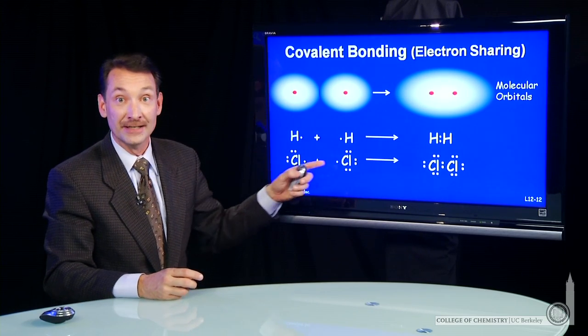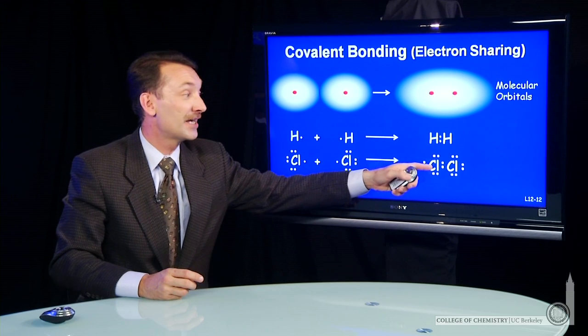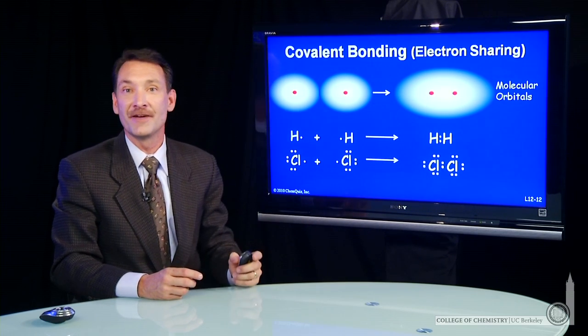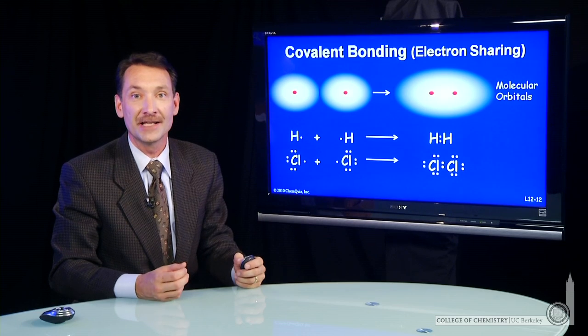Same thing with chlorine. Chlorine can come together and fill its octet of eight by sharing one valence electron, forming a covalent bond.